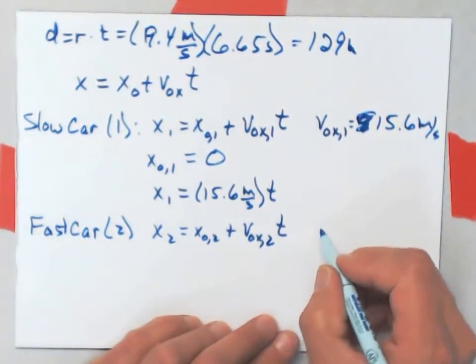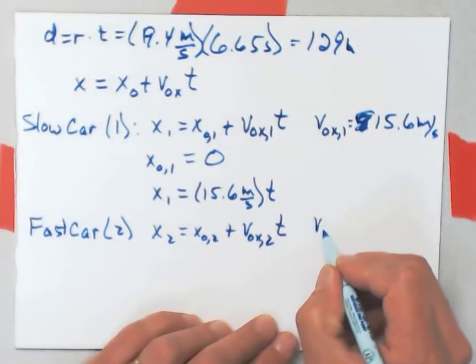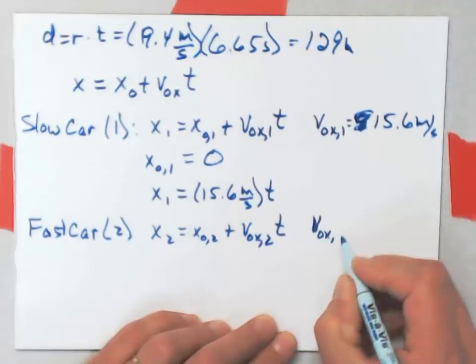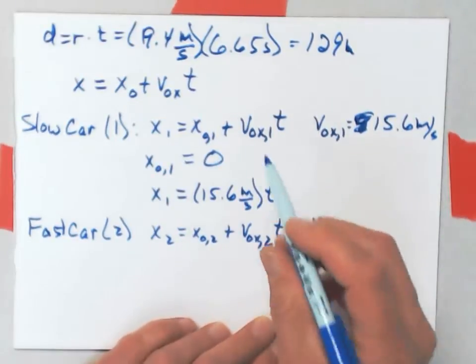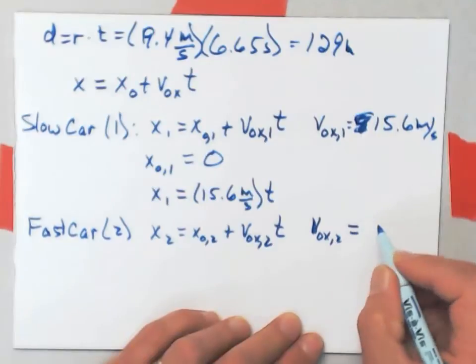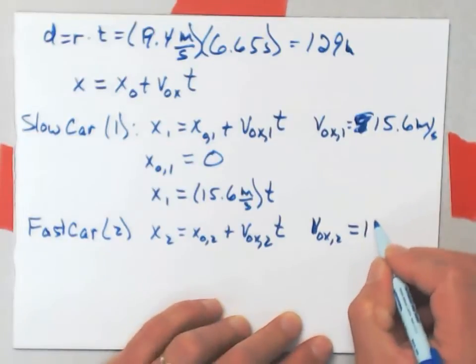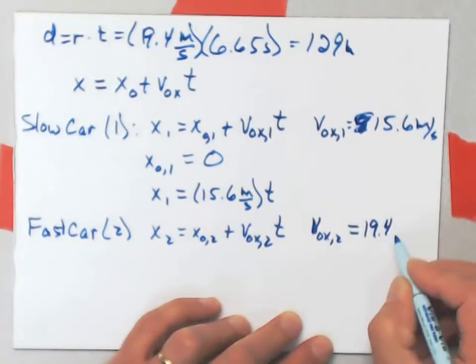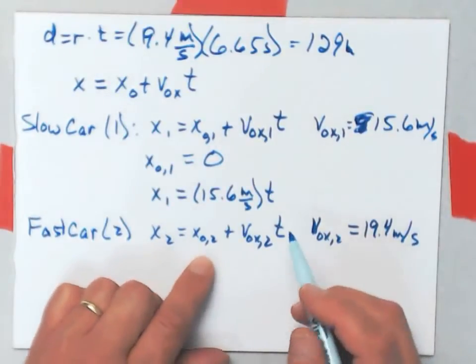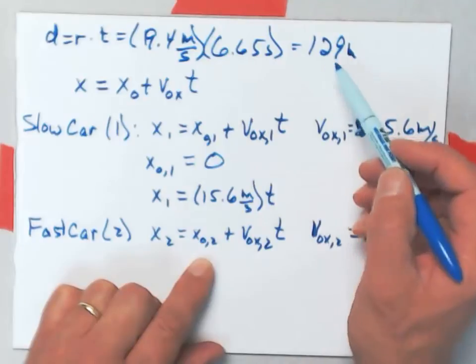And on this one, I know that its constant velocity, so v naught x for car 2. Actually, we didn't have knots on these with constant velocity, but that's okay. Anyway, its constant velocity is 19.4 meters per second.